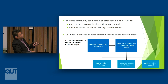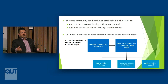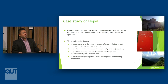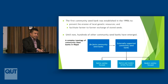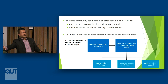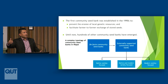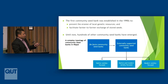Another activity is participating in participatory variety development and breeding programs. In many countries like India, Nepal, and some African countries, there is a growing demand for participatory breeding programs where farmers bring their local or native genetic material to breed together with scientists or public breeding institutes or national agricultural research councils. These are some of the main activities of these community gene banks.